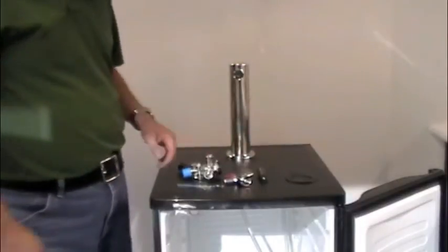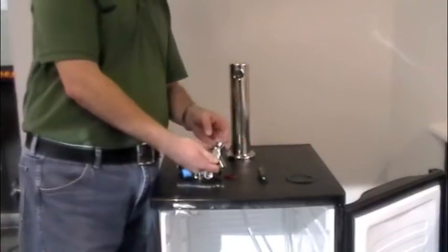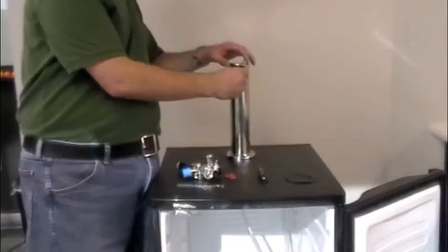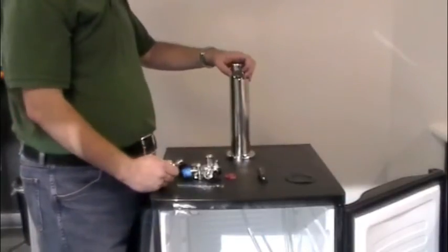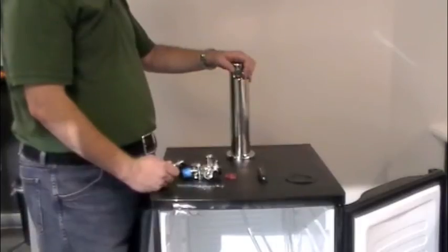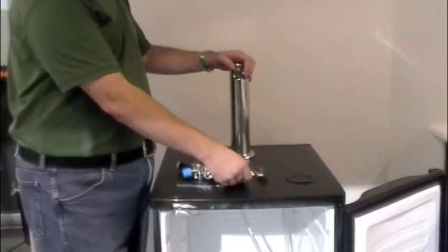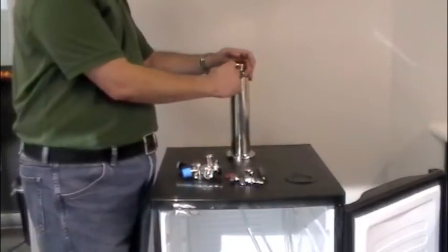So next thing we do is we pick up our faucet. Now this has a bit of a give to it and if you'll notice around the outer edge there are little holes every so often on this nut. You're going to take your tool and you're going to hook the pointy end here into one of these holes and that gives you a way to tighten it up.